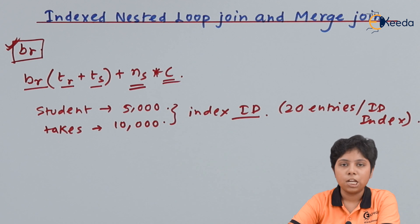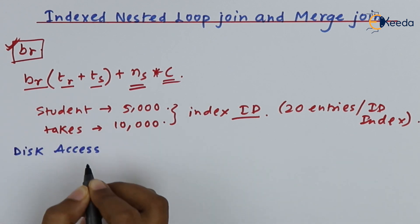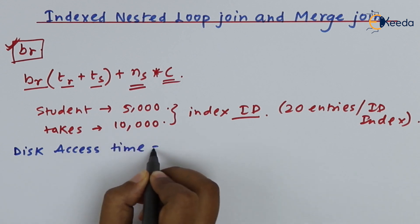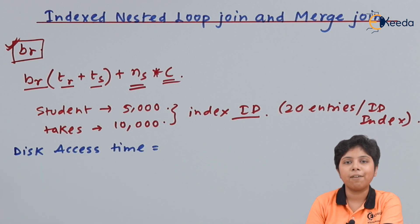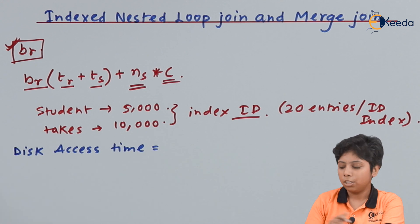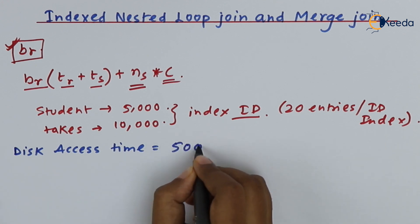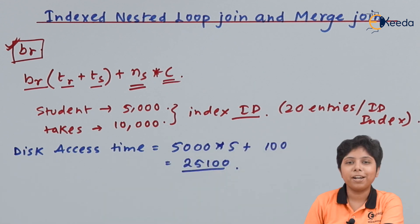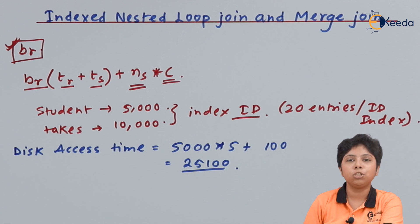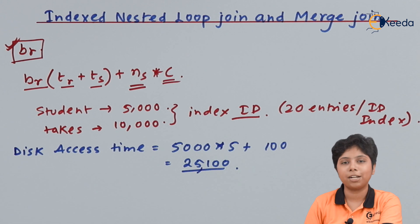Now we will calculate the disk access time. If the height of the tree is four and one for the root node, then there are five at total. With 5000 student entries, the disk access time will be calculated accordingly. If we compare it with the disk access time on a nested loop join, which was much higher — around two lakh entries — now we will have only 25,100 disk accesses.